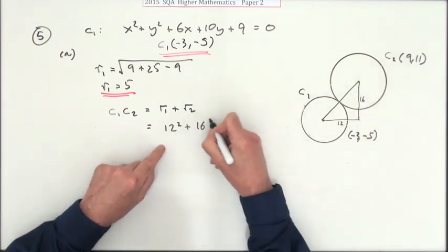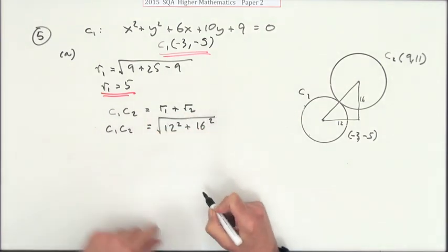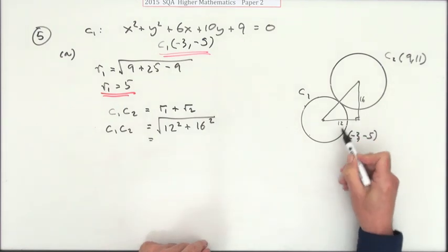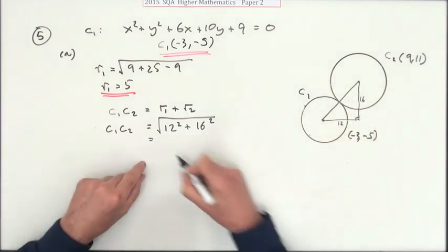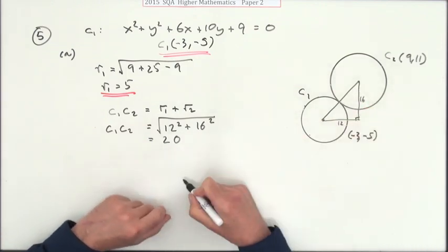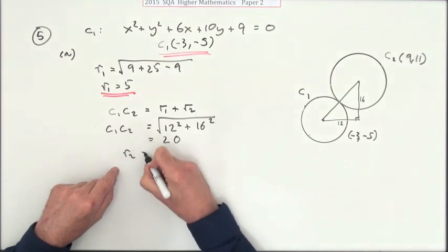12 squared plus 16 squared. C1C2 is going to be the square root of that. You know the answer to that anyway, especially when you see it here in this diagram. Three threes, three fours, three fives. The answer to that is 20. The distance between the centers is 20 units.